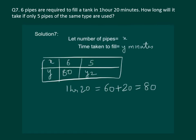and we take 6 into 80 is equal to 5 into y2.